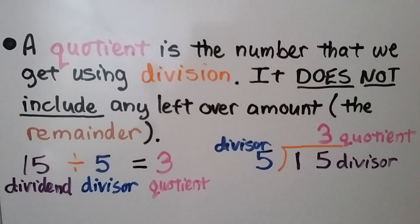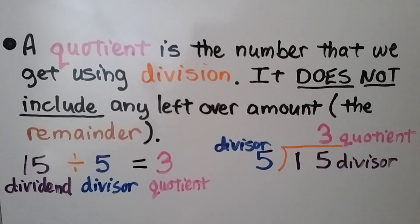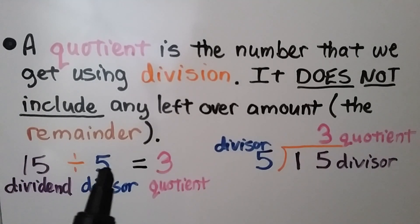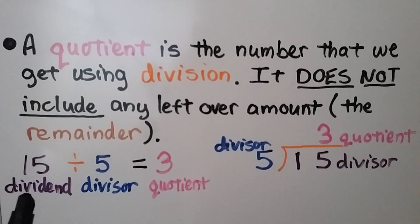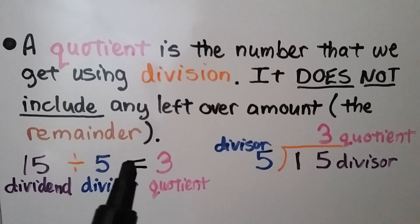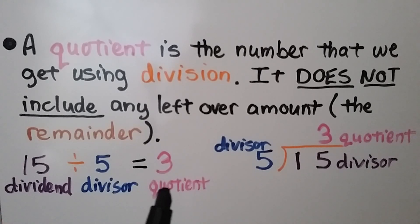A quotient is the number we get using division. It does not include any leftover amount — that would be called the remainder. We have 15 divided by 5. 15 is our dividend, 5 is our divisor, and that would be equal to 3. That's our quotient.